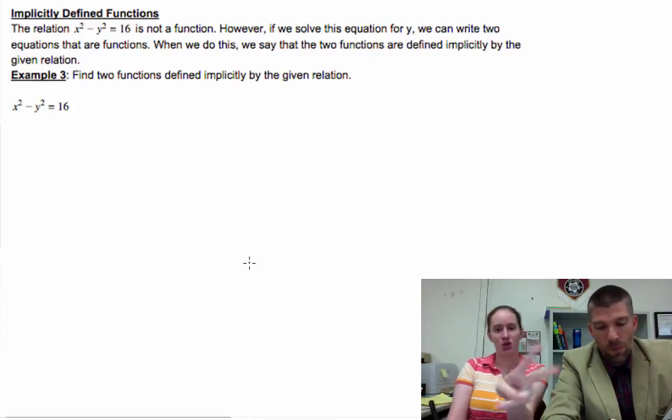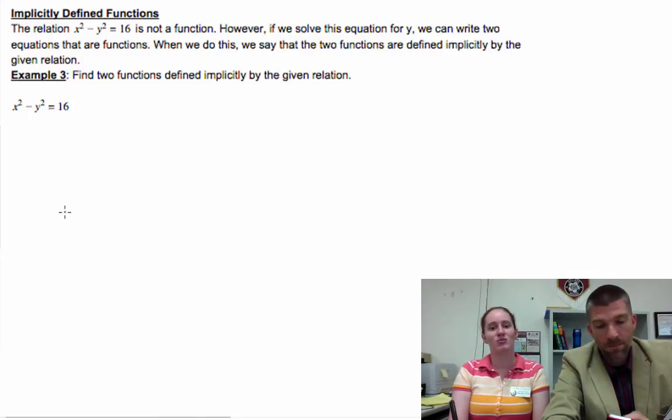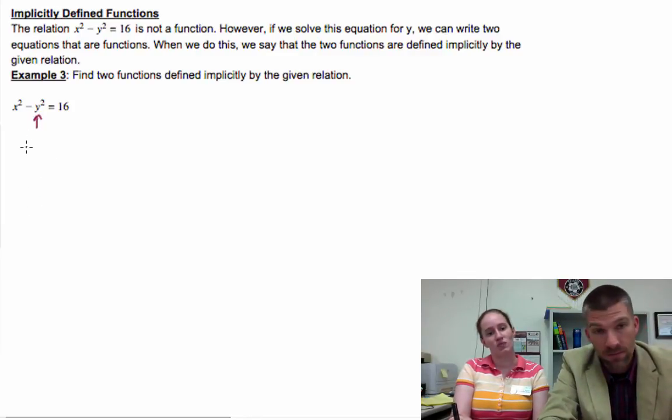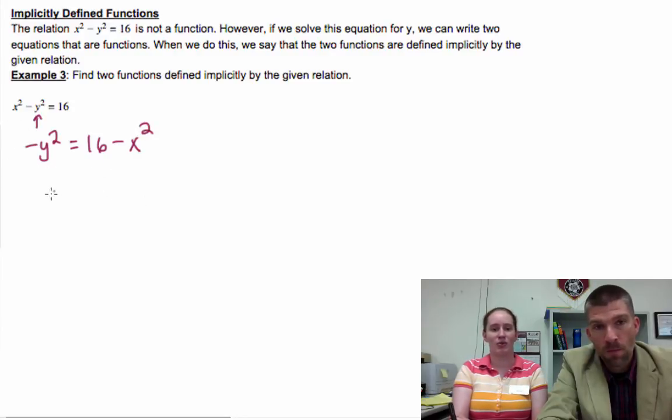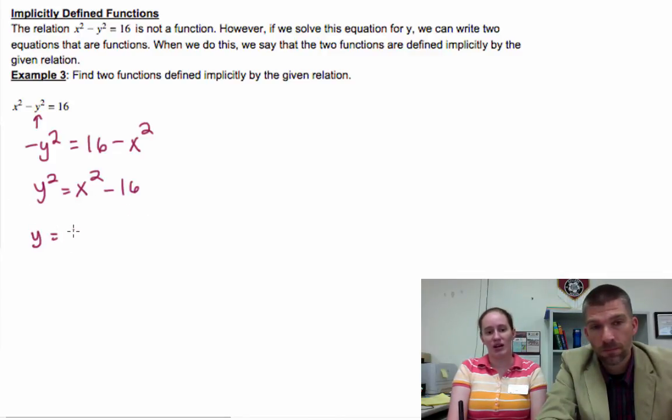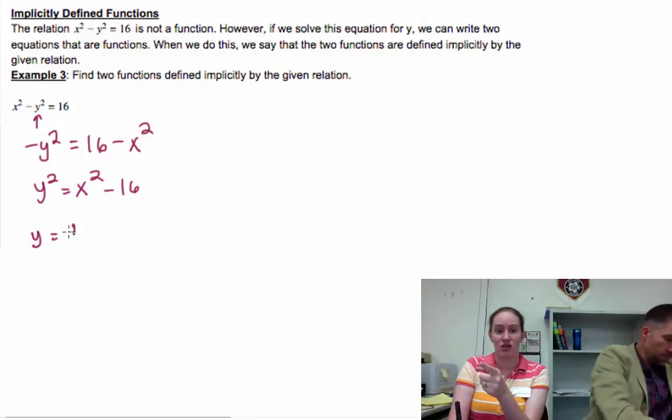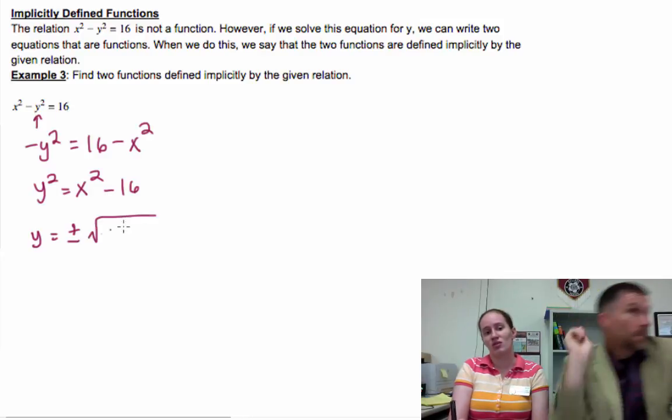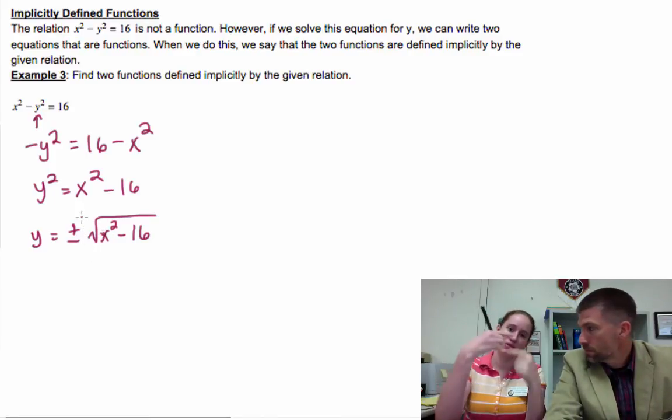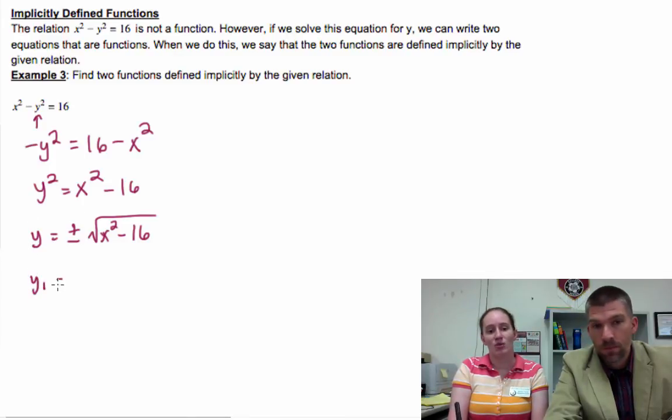However, if we solve this equation for y, we can write two equations. That's correct. And when we do this, we say that the two functions are defined implicitly by the given relation. This is how you would need to graph it on your calculator. So if I solve for y², I've got to subtract x² over. I would multiply both sides by negative one, so that gives me y² = x² - 16. Or I could have left it the other way around. And then I would square root both sides. But if you square root in an equation, you have to put a plus or minus sign, which is why this is not a function.